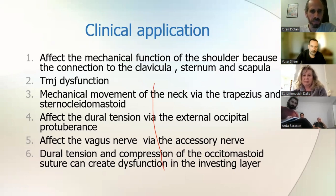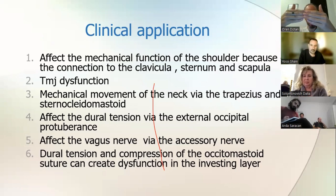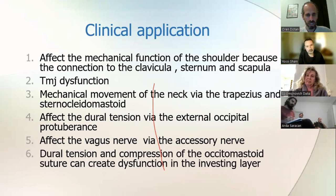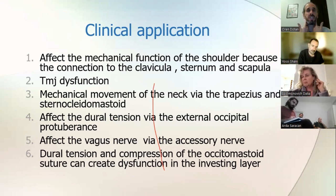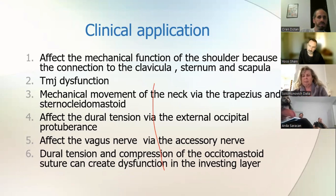When the trapezius and sternocleidomastoid are stuck, the rotation movement of the neck gets affected. It also affects dural tension through the external occipital protuberance — remember it's a two-way street. Dural tension can create dysfunction in this investing layer, and it can also affect the vagus nerve. This is very important, and we'll talk about the vagus also in other parts of the cervical fascia. This investing layer connects to the rest of the body — the same plane includes the pectoralis, latissimus, and so on.